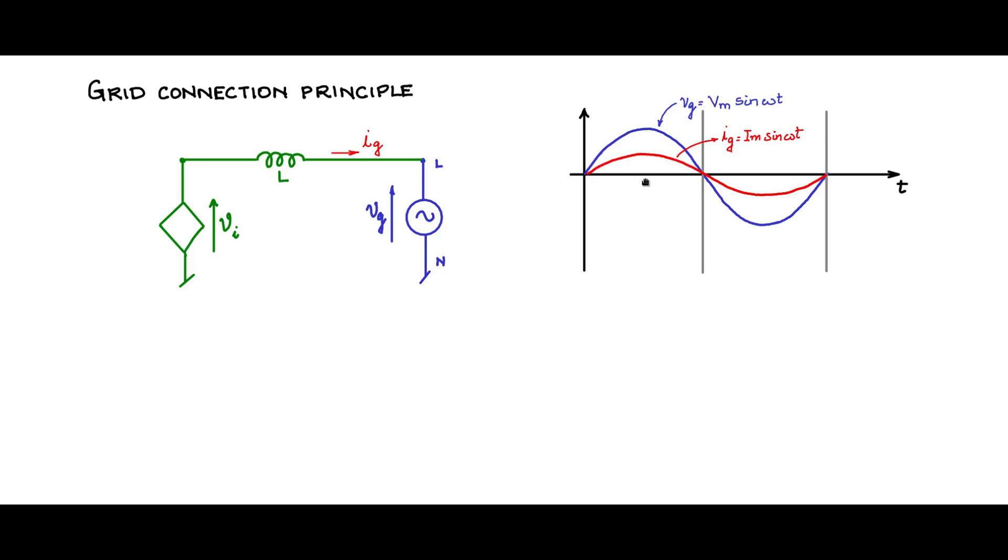What is the power? The power is Vm into IM by 2. You can integrate 1 by T integral of VG IG dt; the average power is Vm IM by 2.